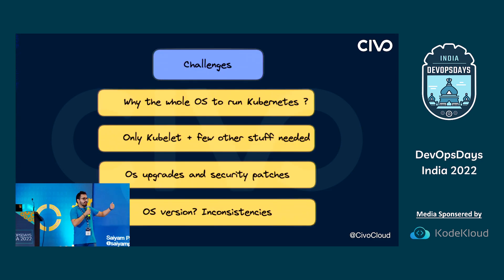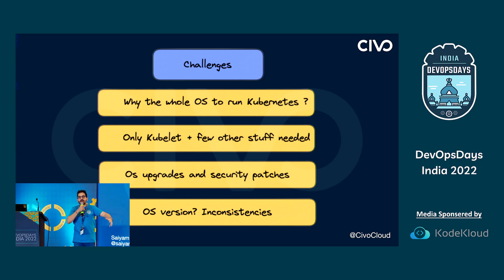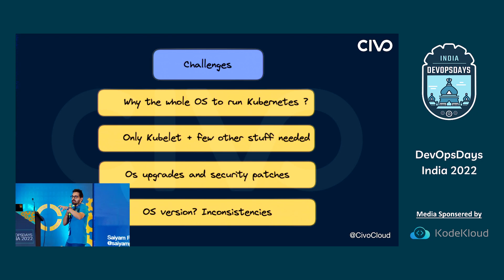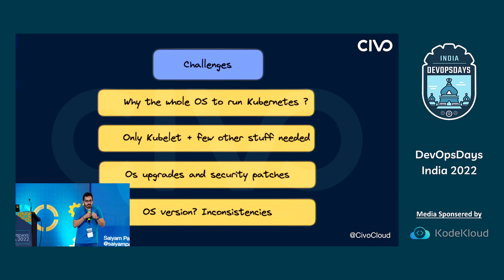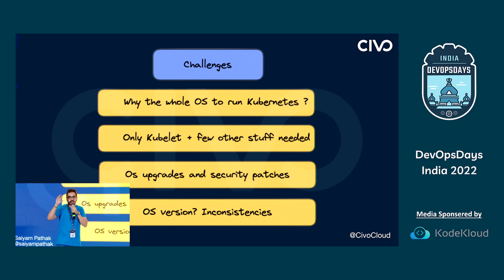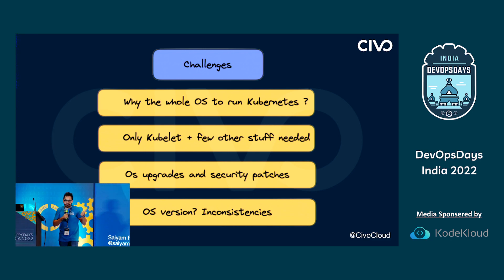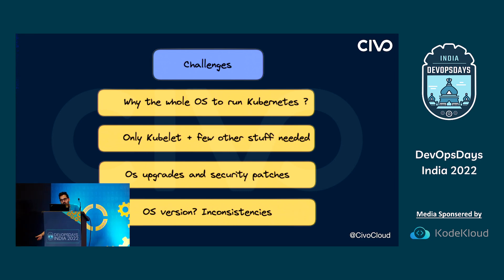The challenge is: if we only want a Kubernetes cluster, why do we want a whole big operating system? Why do we need the additional binaries and libraries when in the end we just need the Kubernetes cluster to deploy our applications? We only need Kubelet and a few other binaries to run Kubernetes. OS upgrades, security patches, and version inconsistencies across cloud vendors with the same OS but different versions remain a real challenge.